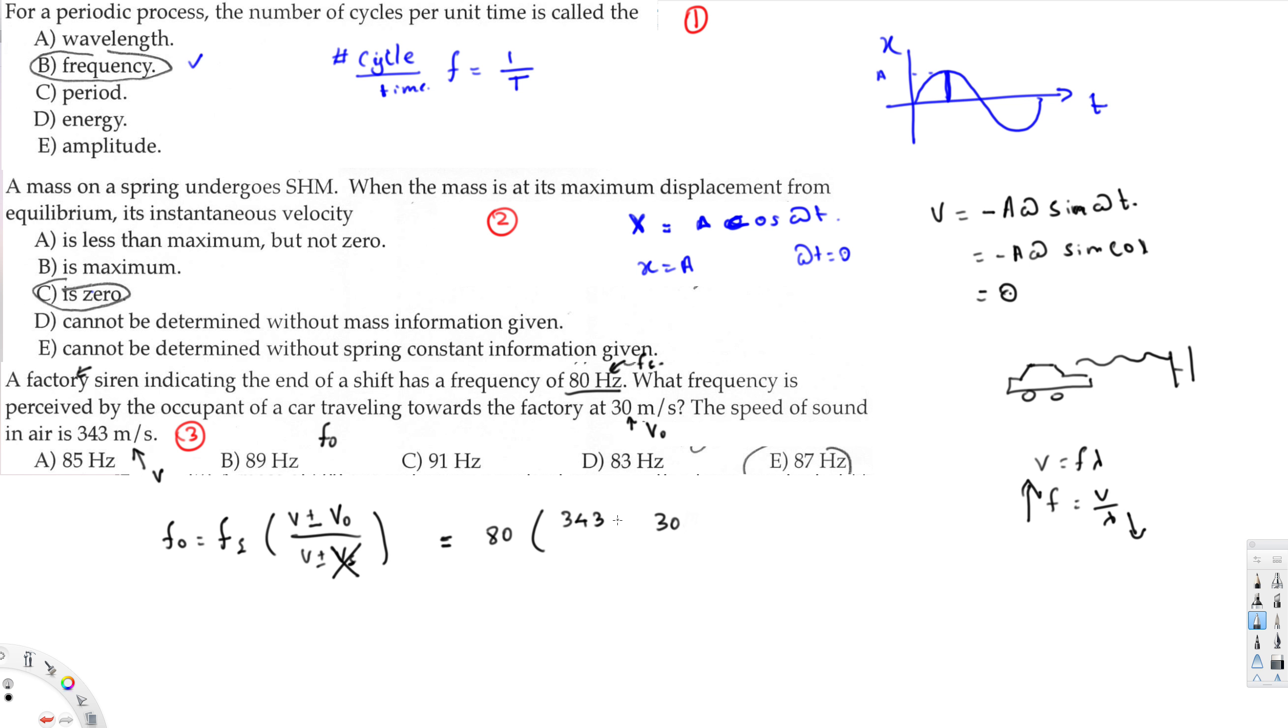Therefore we have to put a value that makes this frequency increase. Here this is in the numerator, so if I put plus, that will increase the value. That's how we put the values. In the bottom it's just going to be the velocity of the sound, so that's 343. Let's do the calculation.